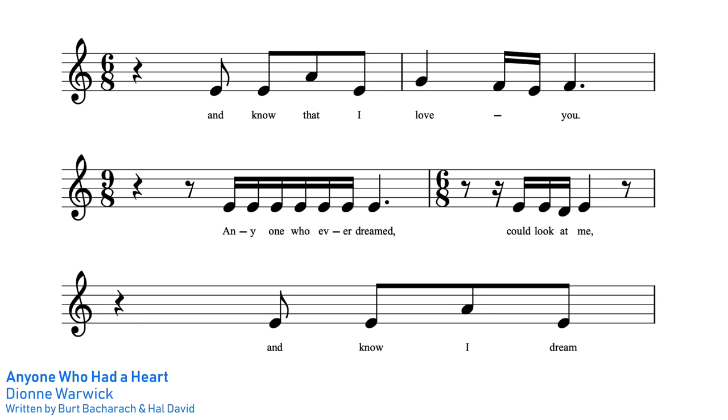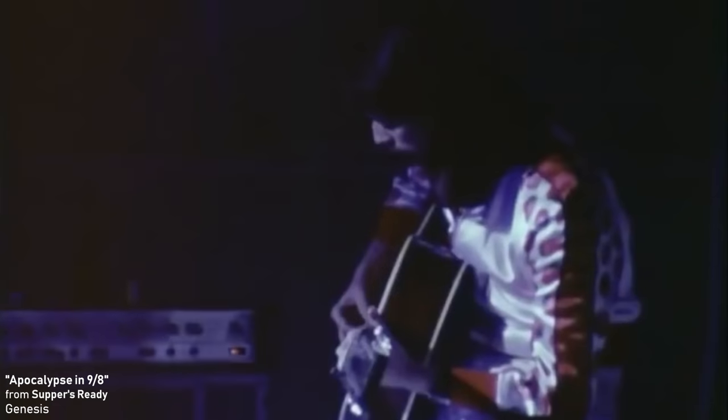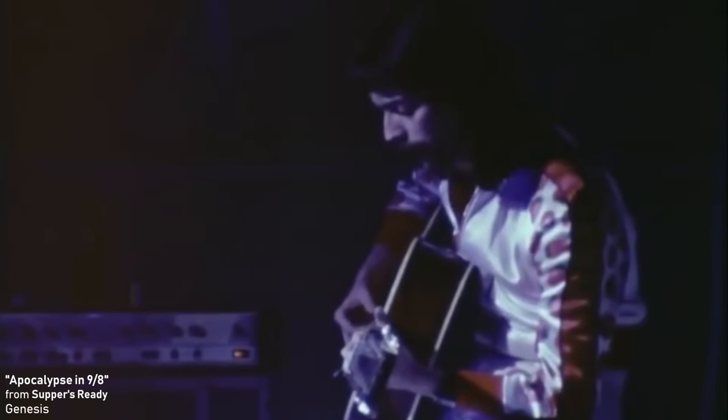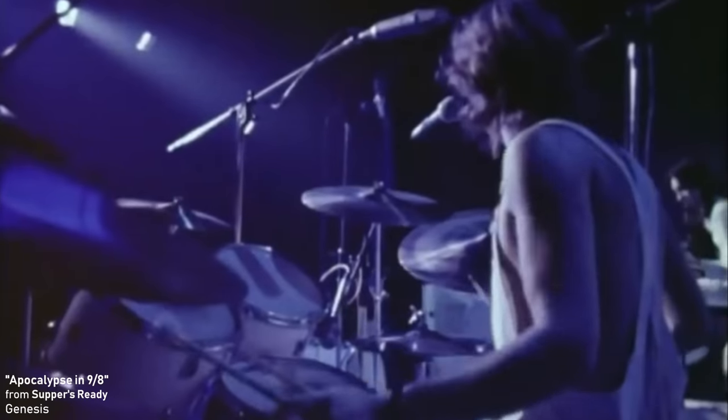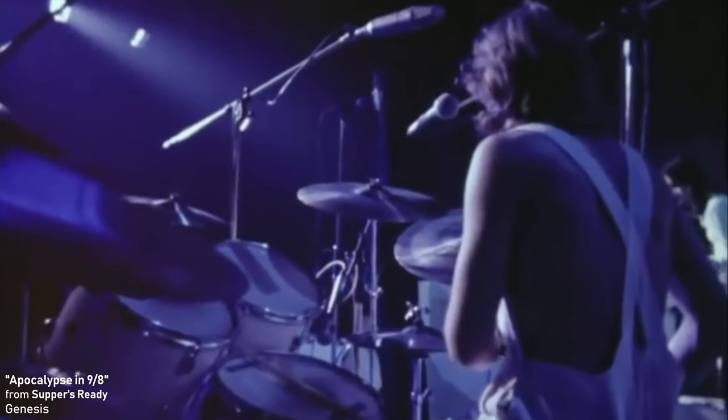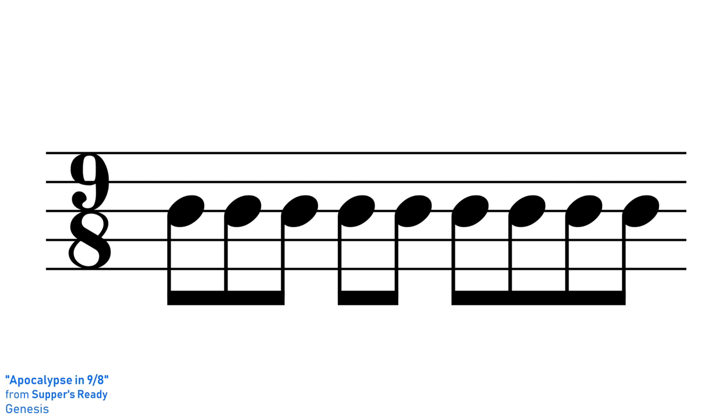Perhaps the wildest use of 9-8 time I've ever heard is the aptly named Apocalypse in 9-8 by Genesis. This so-called Apocalypse in 9-8 is actually a smaller section of Genesis's 23 minute long epic, Supper's Ready. The Apocalypse begins with the drums and bass establishing the 9-8 groove, grouping the 9 beats into a set of 3, 2 and 4 like this.